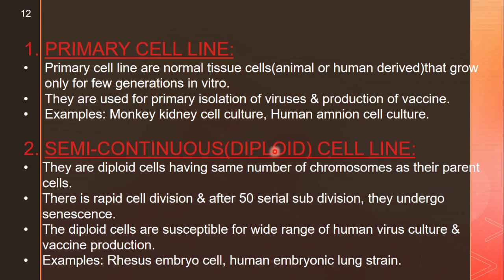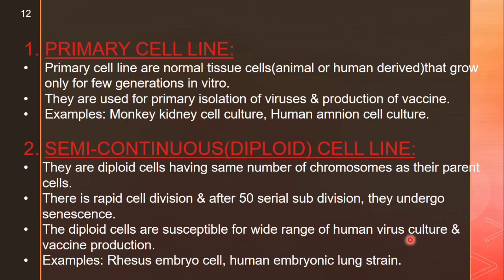Semi-continuous diploid cell line cultures are diploid cells having the same number of chromosomes as their parent cells. There is rapid cell division, and after 50 serial subdivisions they undergo senescence. Diploid cells are susceptible to a wide range of human virus cultures and vaccine production. Examples include WI-38 embryo cells and human embryonic lung strains.